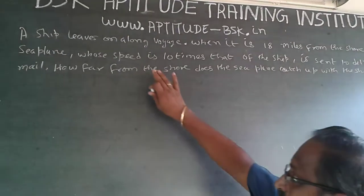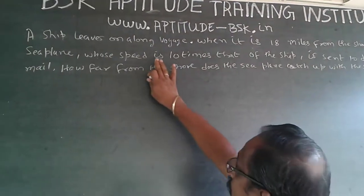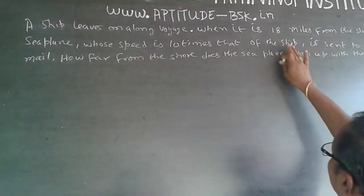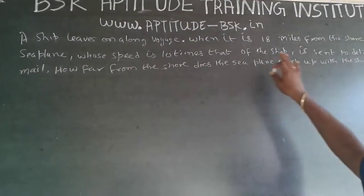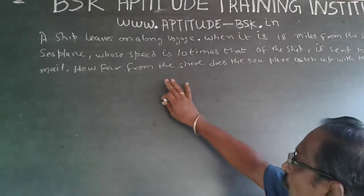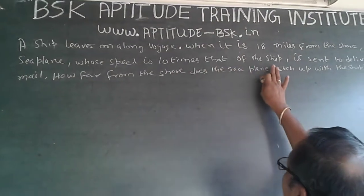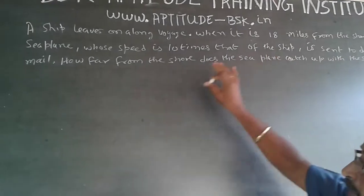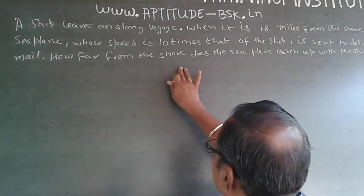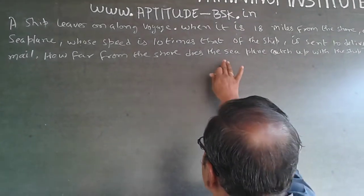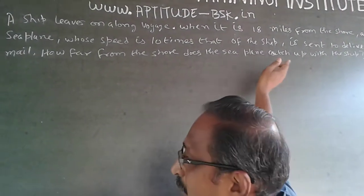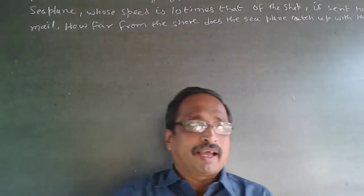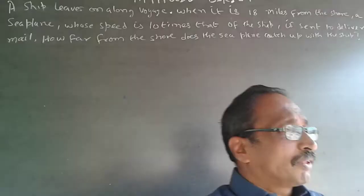The question is: a ship leaves on a long voyage. When it is 18 miles from the shore, a seaplane whose speed is 10 times that of the ship is sent to deliver mail. How far from the shore does the seaplane catch up with the ship?